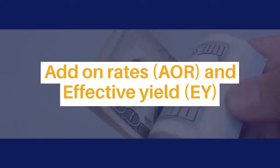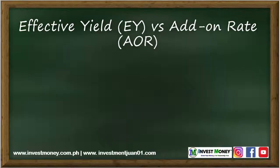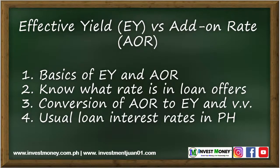Effective yield and add-on rates. In this video we will discuss the following. First, the basics of effective yield, or EY, versus add-on rate, or AOR — what's the difference between the two? Second, how to spot which rate is being shown in our shopping and loans transactions, and how to make better decisions in your loans. Third, how to convert AOR into EY and vice versa. Lastly, usual interest ranges for Philippine loans.